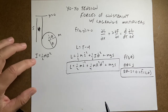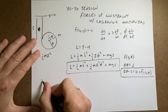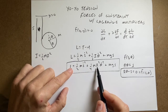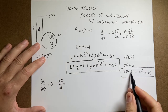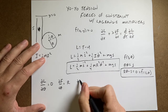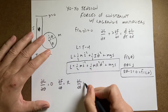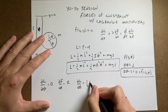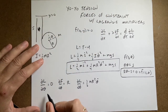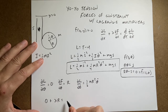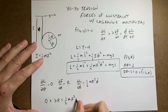Now let's apply the Euler-Lagrange equation, starting with the theta coordinate. The partial of L with respect to theta is zero — no theta appears. The partial of F with respect to theta is r. The partial of L with respect to theta-dot gives one-half m r squared theta-dot. Taking the time derivative of that gives one-half m r squared theta-double-dot. So the theta equation is: λr = (1/2)m·r²·θ̈.